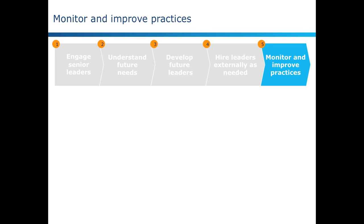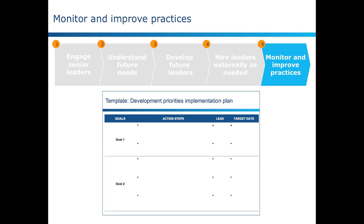Number five, monitoring and improving practices. Effective organizations look both at their results and the process they use to get there, so that they learn and get better over time. Using many of the same tools organizations put in place to track programmatic progress, we'll give you tips to put together a progress monitoring plan for your leadership development efforts.